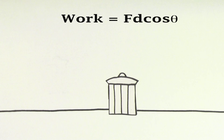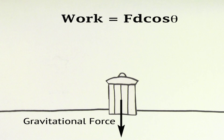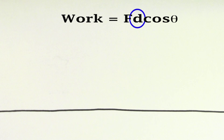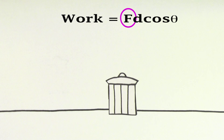There are four forces involved here: tension, the normal force, the gravitational force, and the force of kinetic friction. In finding the work done for all of these forces, the displacement is going to be 10 meters. But the value of the force and the angle between that force and the displacement is going to differ for each of the forces.